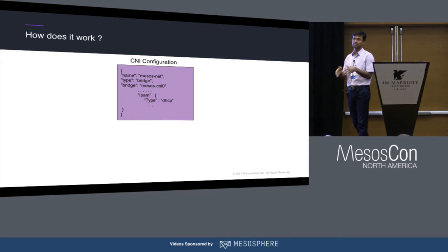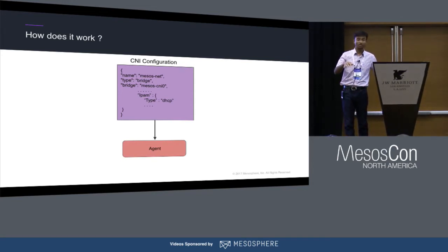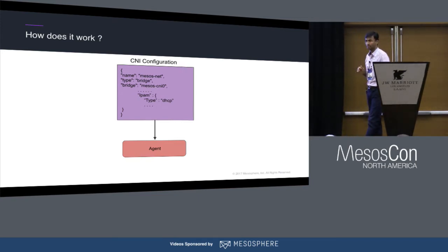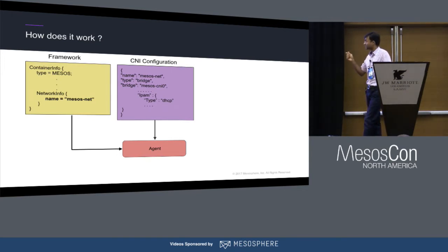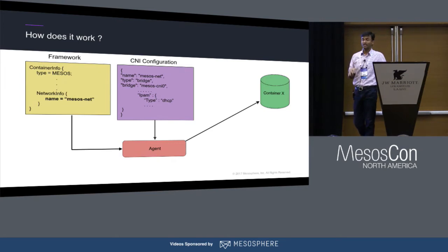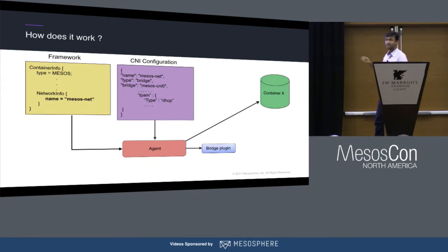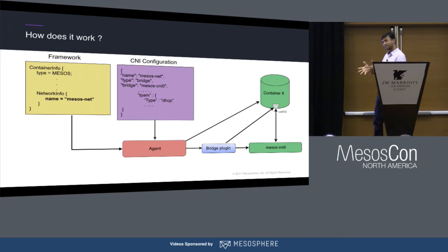There are different types of plugins such as host plugin, bridge plugin, IPAM, and port mapper plugin. This configuration sits on each agent in the DCOS cluster along with the plugin at a predefined location. When a framework wants to launch a task on a particular virtual network, it fills in the network info in the Mesos protobuf — specifically the name of the virtual network. The agent creates the network namespace, hands it to the plugin (in this example a bridge plugin), and the bridge plugin connects the container to the host network. That's how the CNI machinery works in DCOS.